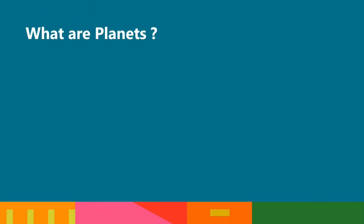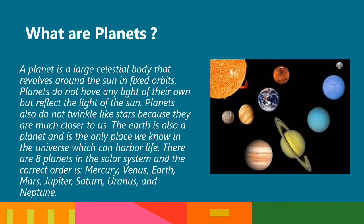What are planets? A planet is a large celestial body that revolves around the Sun in fixed orbits. Planets do not have any light of their own, but reflect the light from the Sun. Planets also do not twinkle like stars because they are much closer to us. The Earth is also a planet and is the only place we know in the Universe which can harbor life.